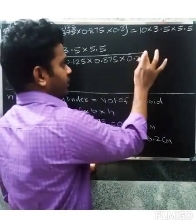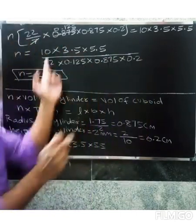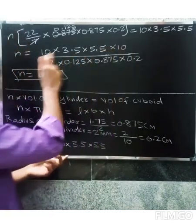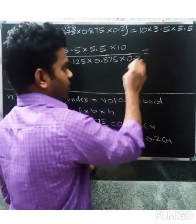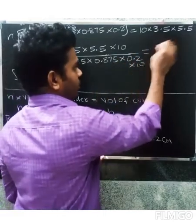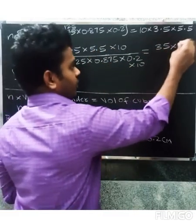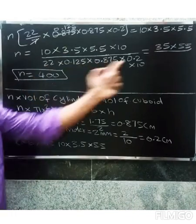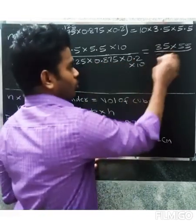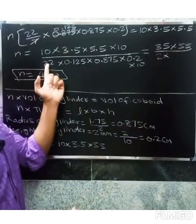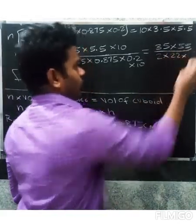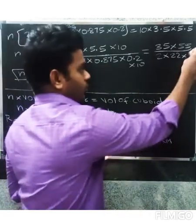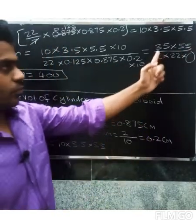Multiplying the values: 35 into 55 in the numerator, divided by the denominator. Converting 0.2 into 10 gives 2, and 0.125 into 0.875 calculated, we simplify to get n equals 400.